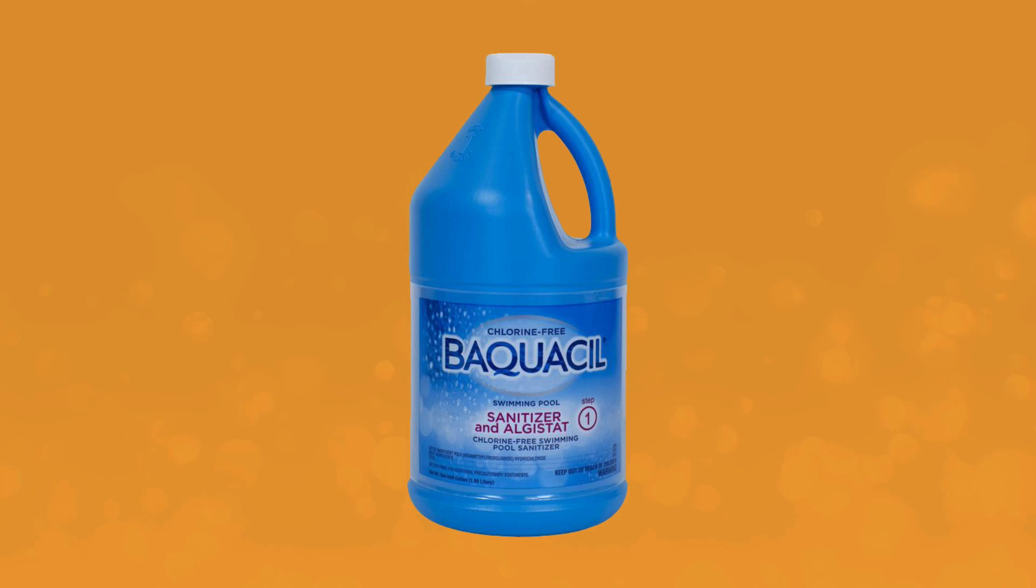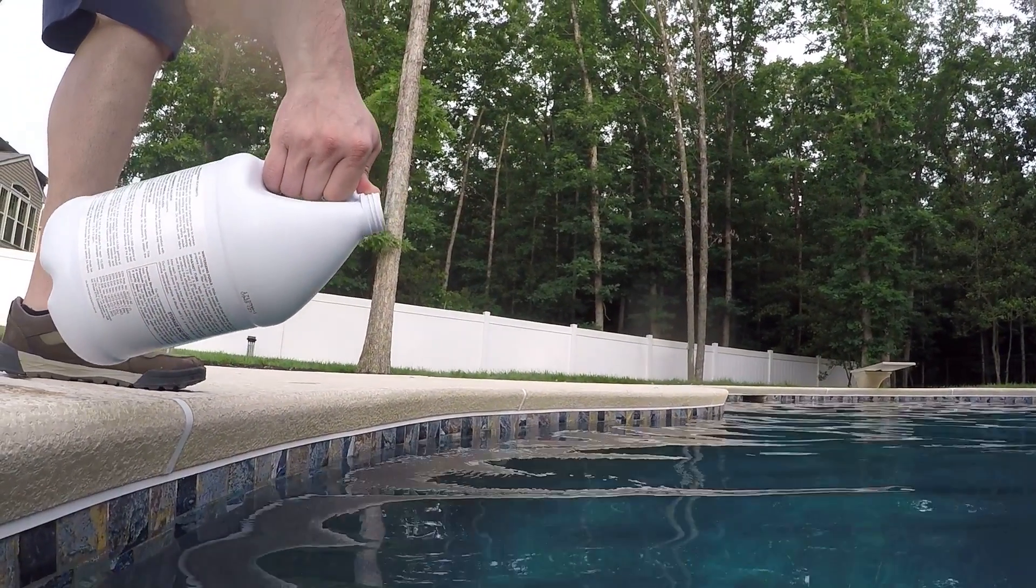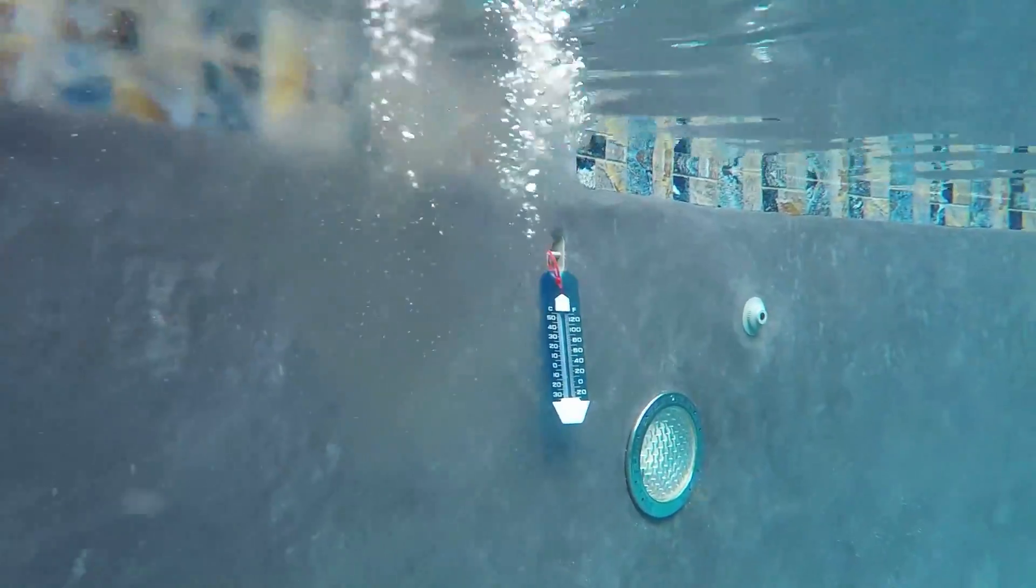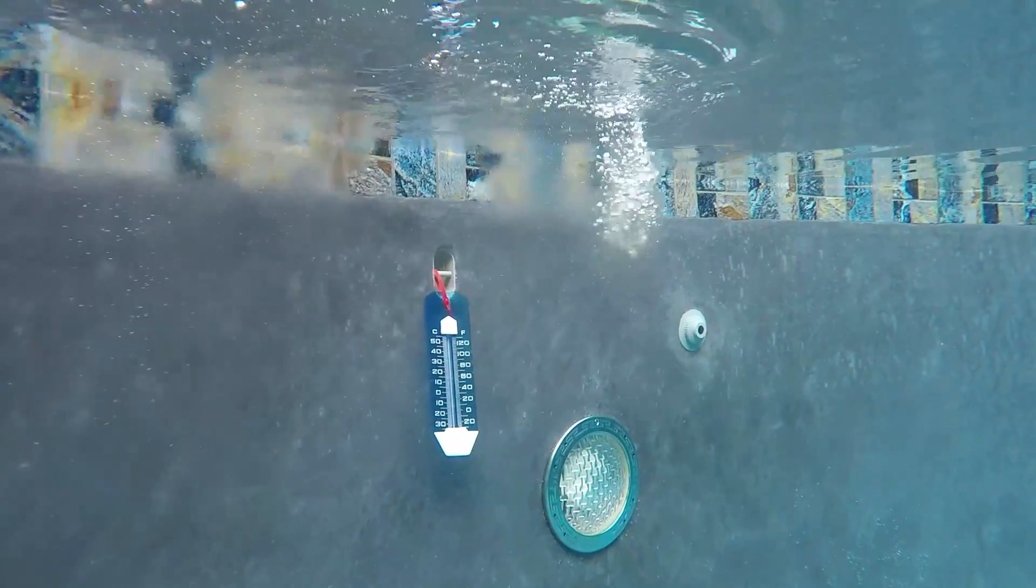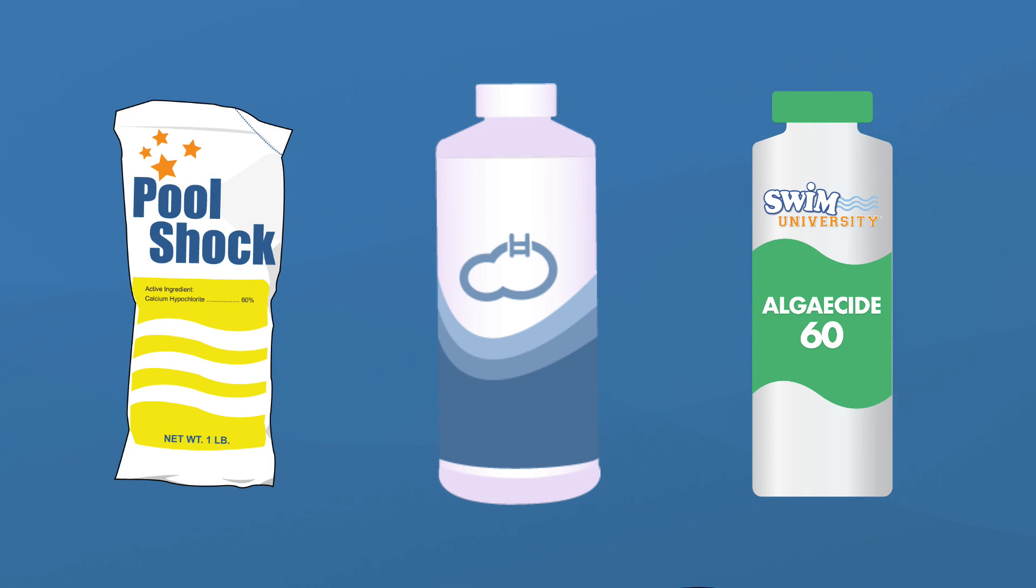Another chemical you can use is called PHMB or Baquasil, and that's the brand name. There's also a brand called SoftSwim made by BioGuard. Both of these are a peroxide based sanitizer and it's completely liquid. So unlike chlorine and bromine, which come in powder or tablet form, Baquasil and SoftSwim come in all liquid form. And they have their own special shock, their own special sanitizer, and they even sell their own special algaecides and clarifiers specifically to use with that system.